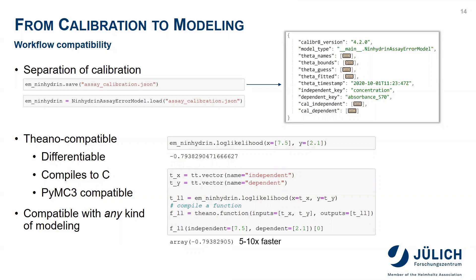This way, they can be used with any kind of modeling. In the example shown here, we have the pure NumPy/SciPy implementation, but also an implementation that creates a compiled function for the log-likelihood of our error model. This is done by creating Theano tensor variables for the independent and dependent variable. These tensor variables are given into the log-likelihood method, which then returns a Theano tensor variable. Using the Theano function, we can compile a Python callable that calculates the log-likelihood based on the inputs x and y. This compiled implementation is 5 to 10 times faster than the pure NumPy/SciPy implementation above.